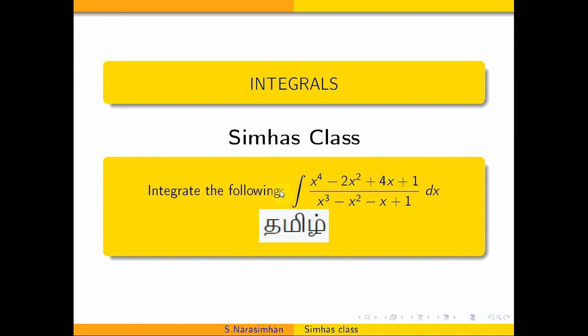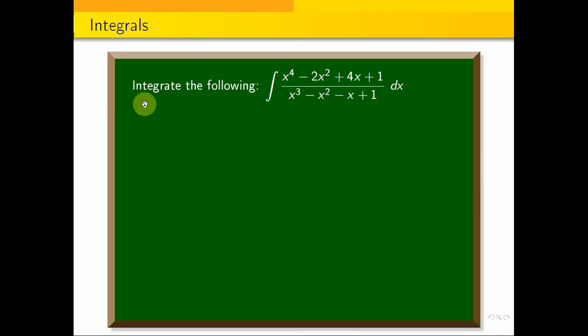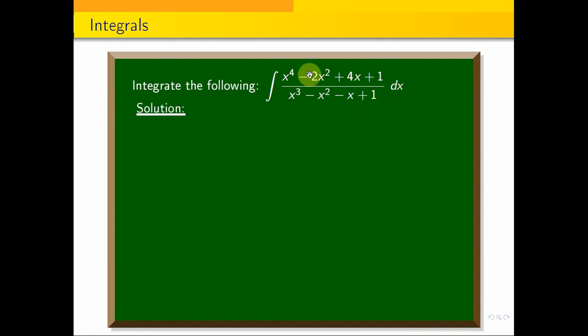Hi students, welcome to CMOS classes. Integral — apply partial fraction and integrate the following: (x⁴ - 2x² + 4x + 1) / (x³ - x² - x + 1) dx. So let's integrate this.